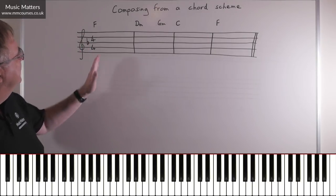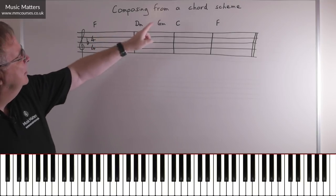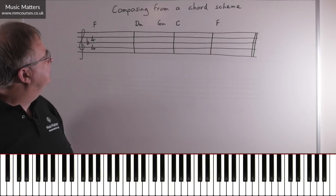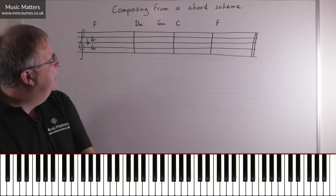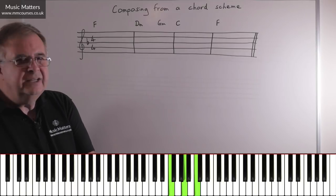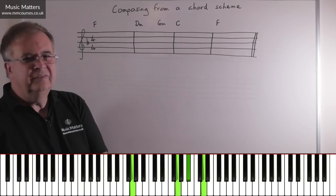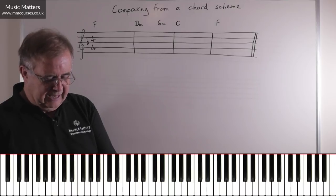So what I've got here is a blank four bars and I've got a chord pattern that I came up with earlier that might be something that you think would be the sort of thing I could work for. So here are the chords. So I've got an F chord, then a D minor chord, then a G minor chord, then a C chord, and then an F chord.